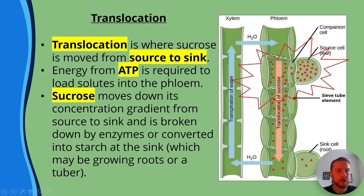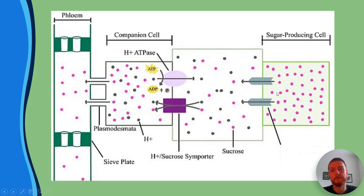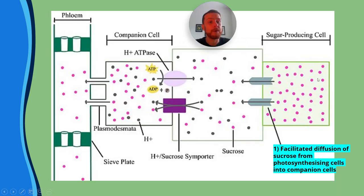I recommend drawing your source cell, companion cell, and sieve tube element, because we're going to go into technical detail of how sucrose is loaded into the phloem. We've got our sugar-producing cell — remember, that could be a palisade cell packed full of chloroplasts to make sugar via photosynthesis.